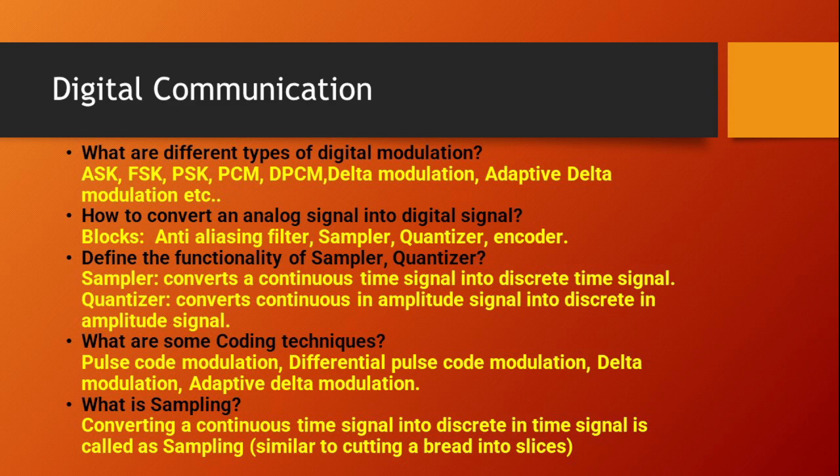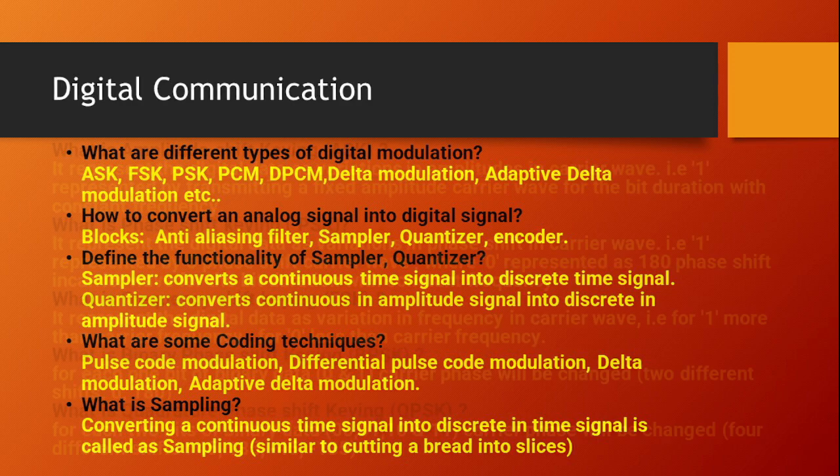What are some coding techniques? Pulse code modulation, differential pulse code modulation, delta modulation, and adaptive delta modulation are the coding techniques. What is meant by sampling? Converting a continuous time signal into a discrete in time signal is called sampling. This question is most probably asked in digital practicals.